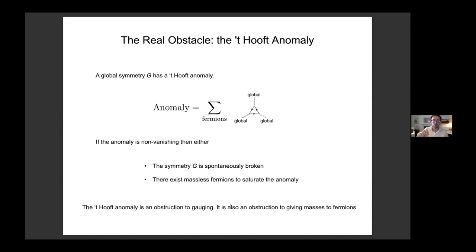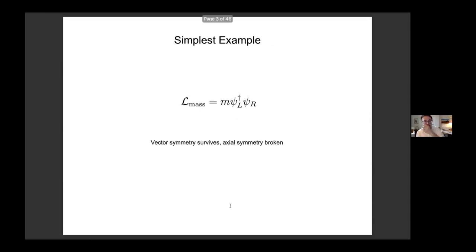In addition, the 't Hooft anomaly is also an obstruction to giving masses to fermions while preserving the symmetry. Because this 't Hooft anomaly is invariant under RG, if you have a global symmetry whose 't Hooft anomaly is non-vanishing, it's game over — there's no possible way to give masses to those fermions preserving that symmetry G. Indeed, if you calculate the 't Hooft anomaly for the axial symmetry for a single Dirac fermion, it's non-vanishing, meaning any way you give a mass to a single Dirac fermion, you always break that axial symmetry.